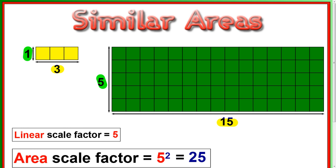Now do 25 of these fit in here? Well, let's look at the areas first. The area of this one is 3, isn't it? 3 times 1. The area of this one is 5 times 15, which is 75. Now is 3 times 25 equal to 75? Oh, yes it is.